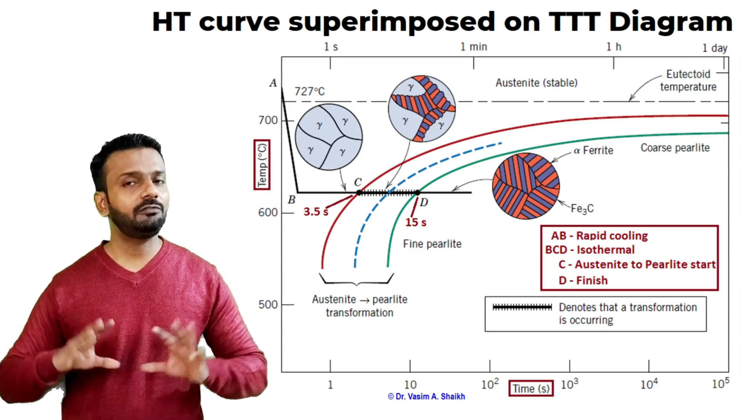To conclude, today we discussed the basic definition of heat treatment, TTT plots, and CCT plots. These are very important because when we superimpose the cooling curve on these plots, we exactly know what phases we will get, and these phases are associated with certain properties needed for specific applications. By understanding these plots, we know what heat treatment to apply to achieve the desired properties. Thanks for watching, all the best.